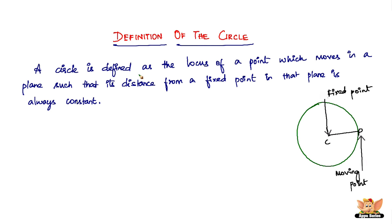Let me explain the same thing with respect to the diagram. A circle is defined as the locus of a point — let this be point P, the moving point — which moves in a plane such that its distance from a fixed point C, called the center, is always a constant. Whether it goes here, here, or here, the distance from C will always be the same. That constant distance is also called the radius.